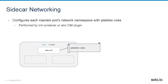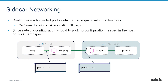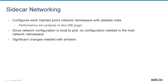Each pod has its own network namespace. With an init container — the current default — you get a sidecar injected along with an init container that creates the iptables rules necessary for redirection. Those iptables rules are created only in the pod's network namespace. Then the rest of the application spins up, and as network traffic happens inside that pod, those iptables rules kick in to redirect the traffic. Whether two pods are on the same node or different nodes, those iptables rules only interact with traffic inside that specific pod.